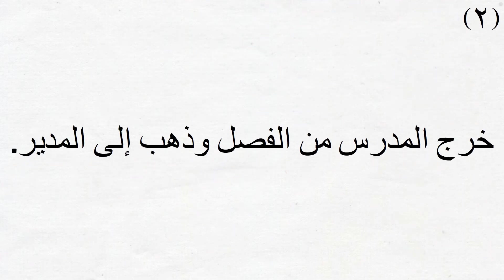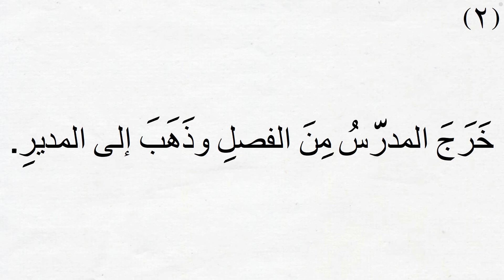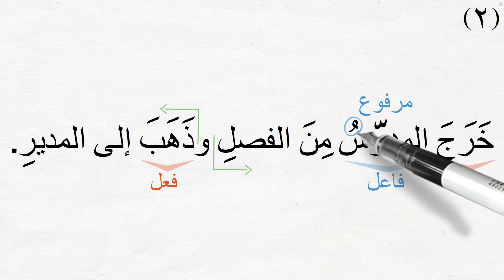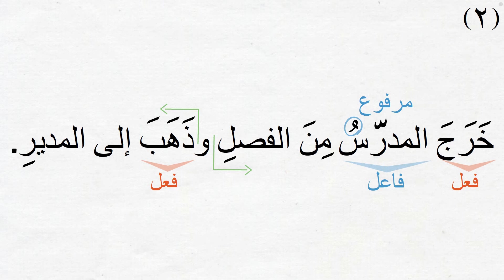Next: خرج المدرس من الفصل وذهب إلى المدير — 'The teacher came out of the classroom and went to the principal.' This is a jumla fi'aliyya — in fact, we have two jumla fi'aliyya here. The first starts with the fi'al خرج and the second with ذهب. The fa'al of the first sentence is المدرس, which is marfu'. The fa'al of the second sentence is hidden and refers to huwa.